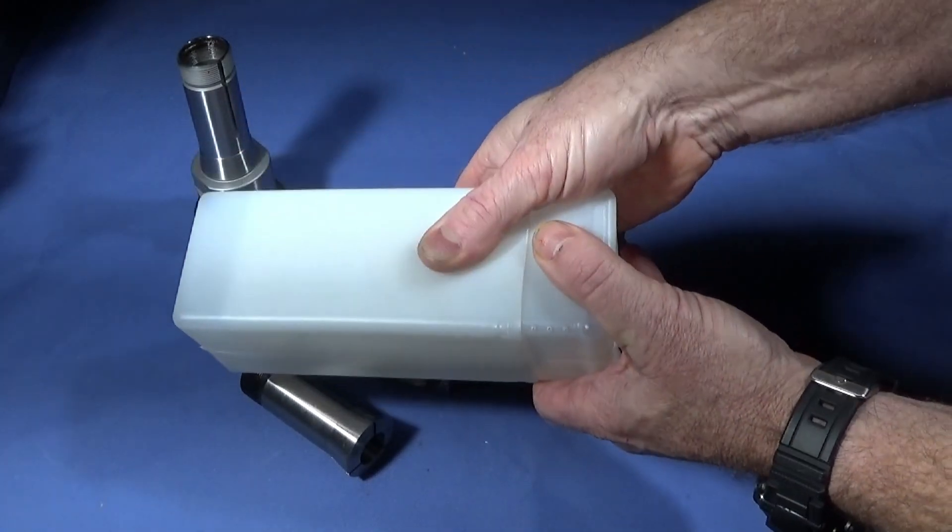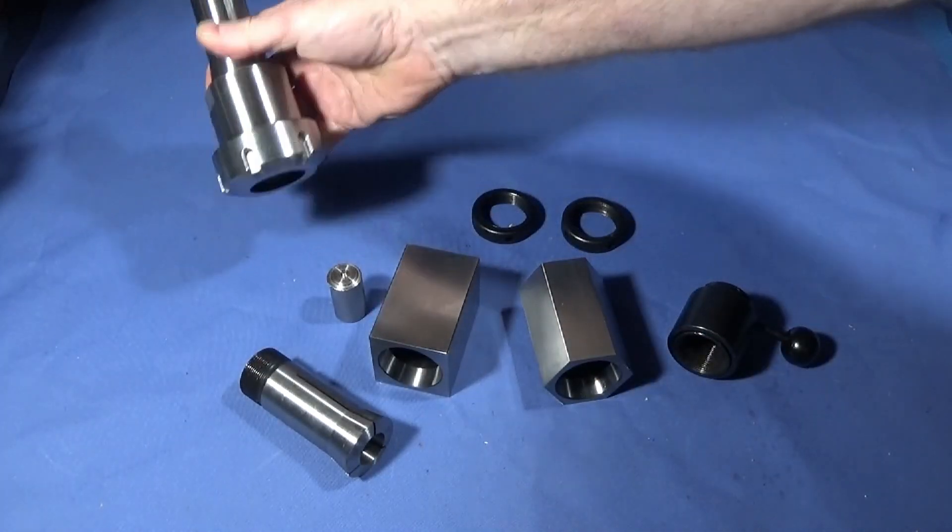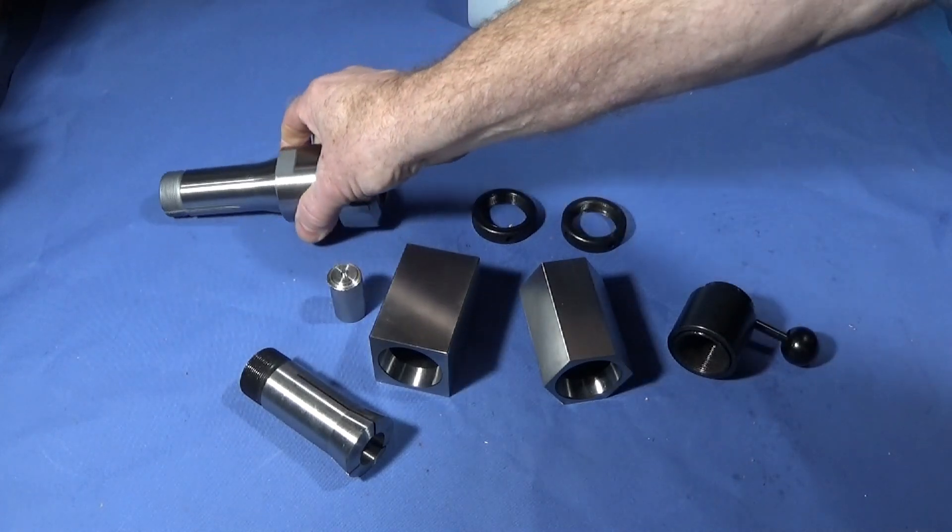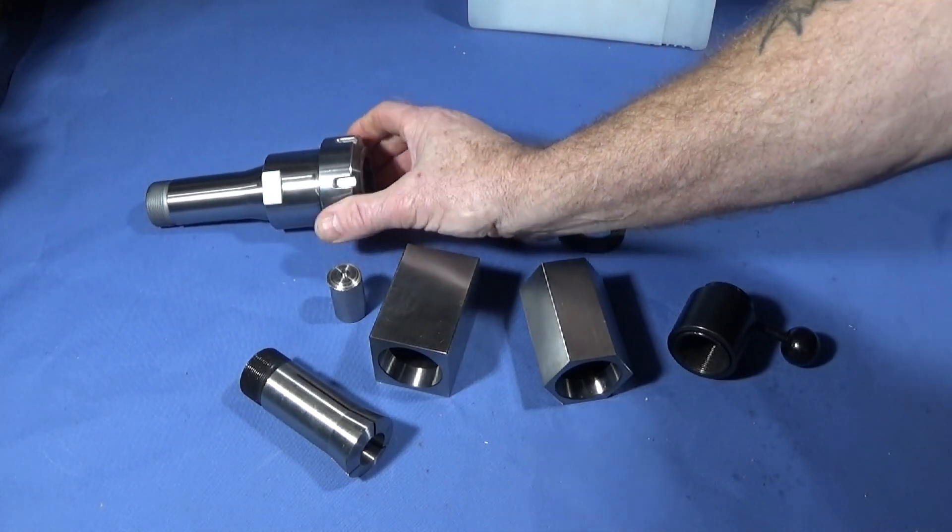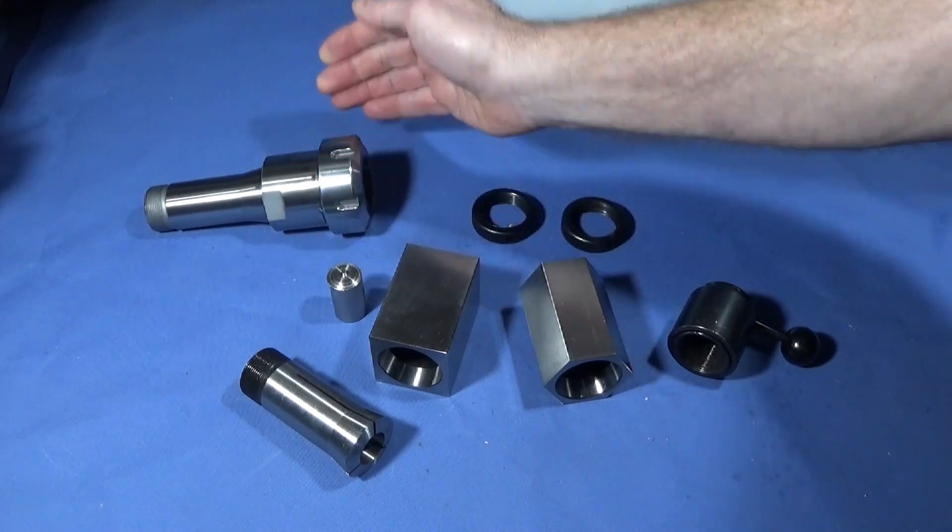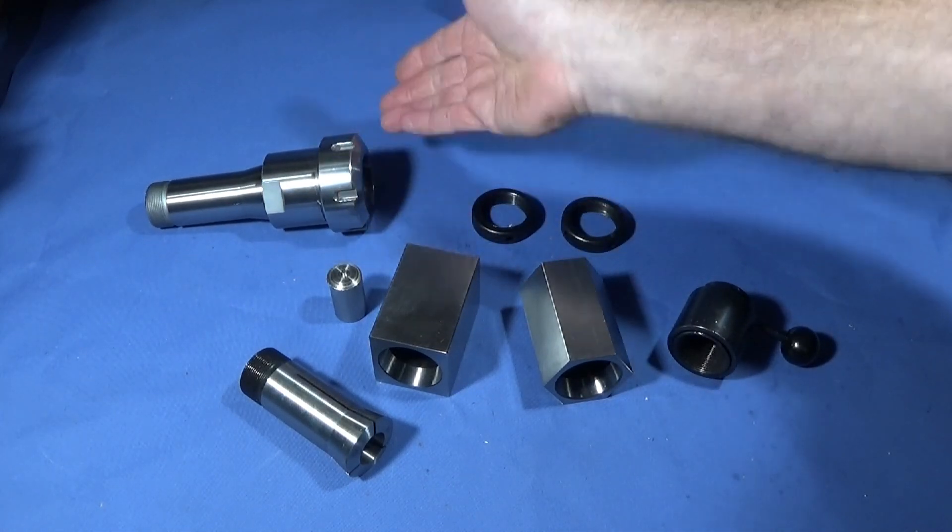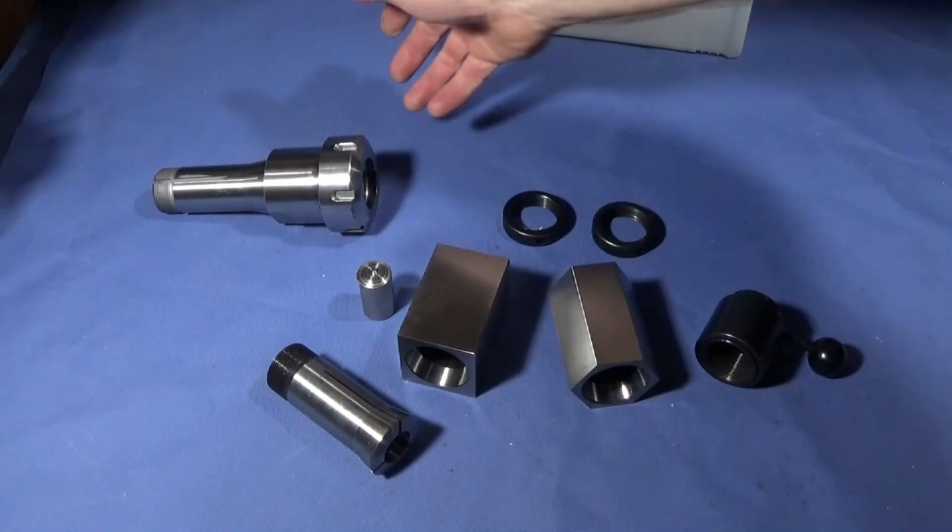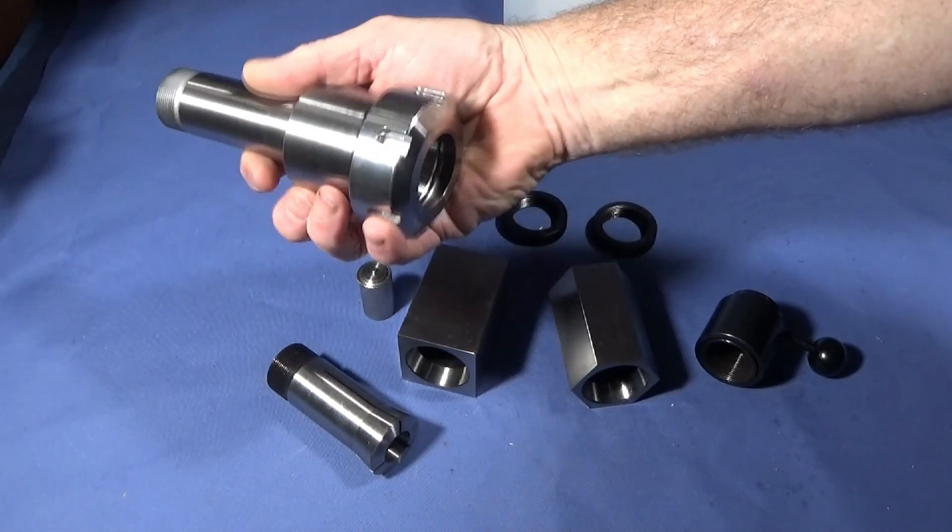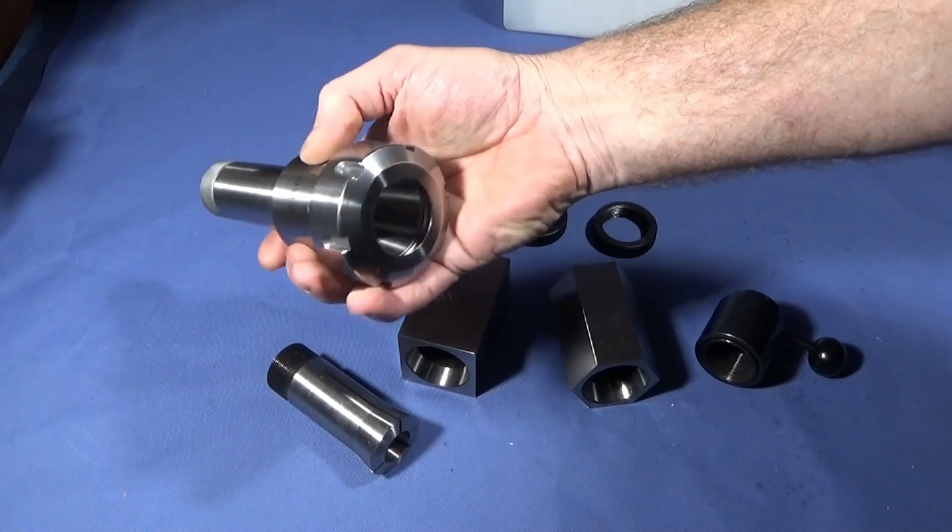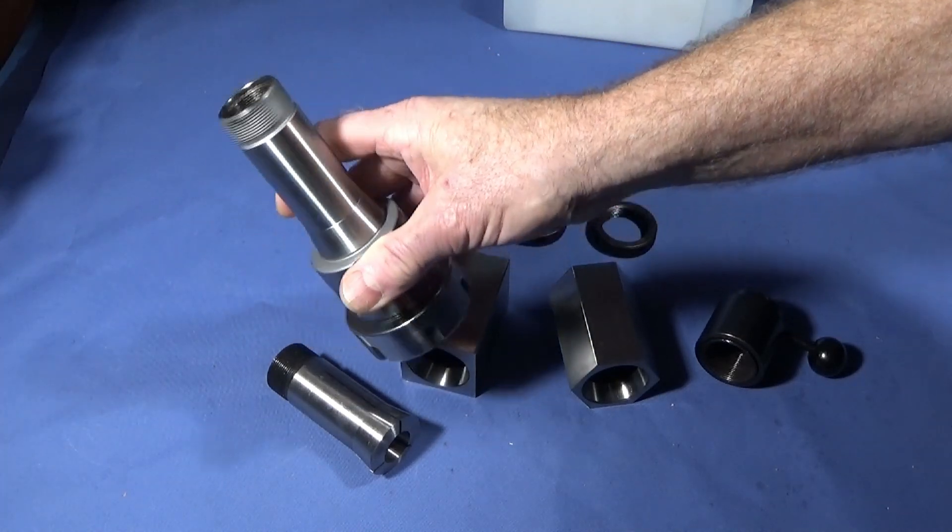You can get these in all the various different ranges of collet chuck to 5C - you can get the ER40, the ER25, and all the others as well. They're very low cost for what they are, perfectly ground, lovely finish, and I'm really pleased with it. It's a great addition to the workshop.